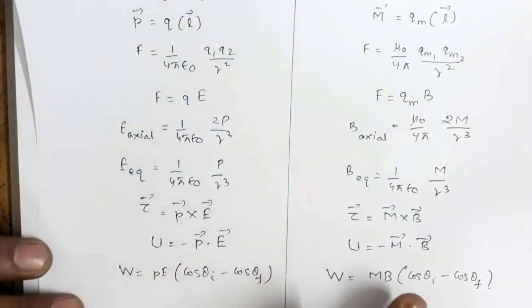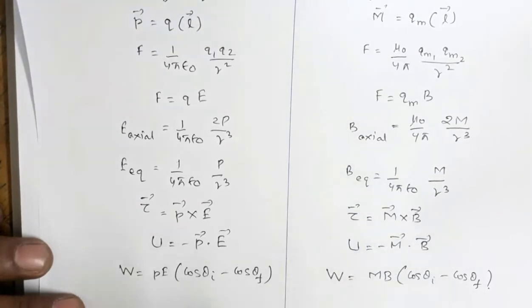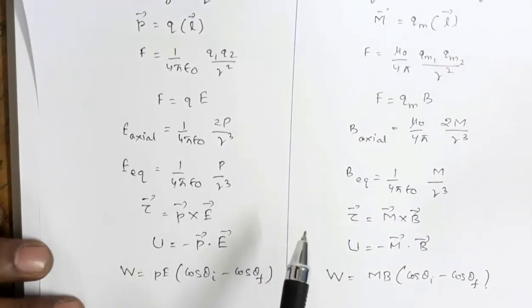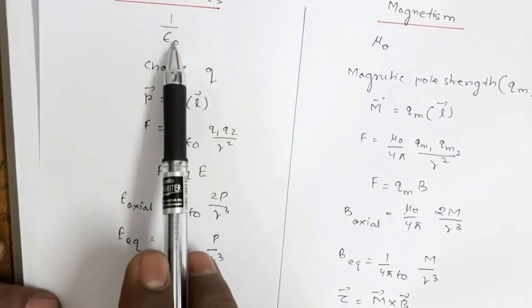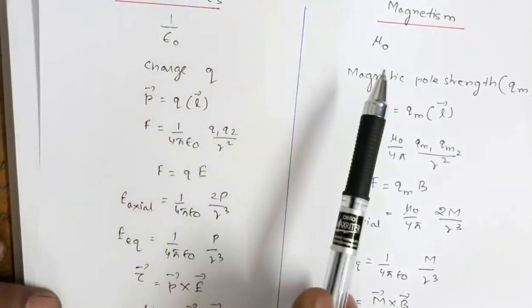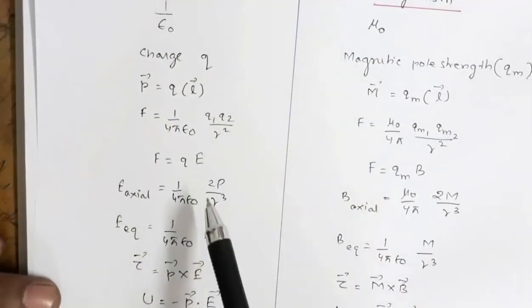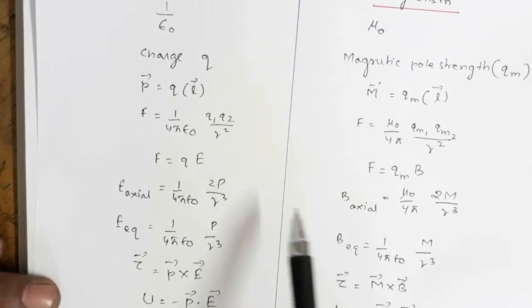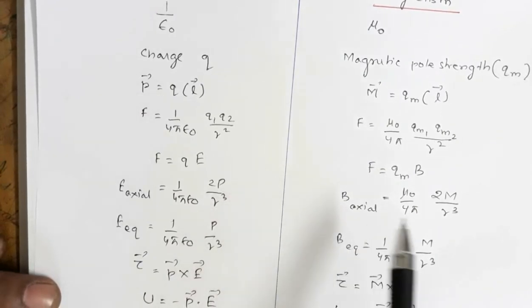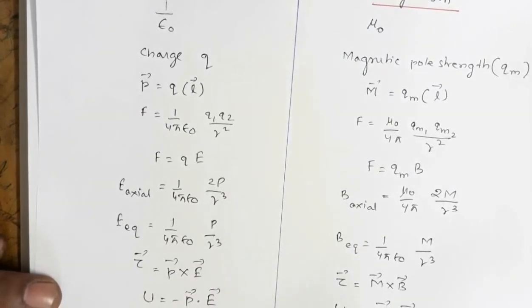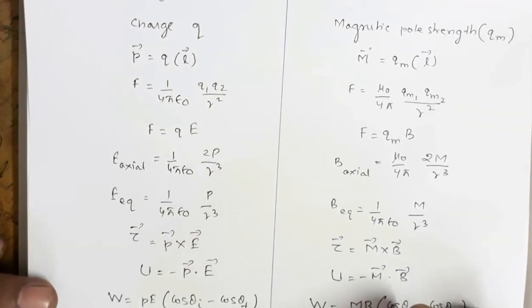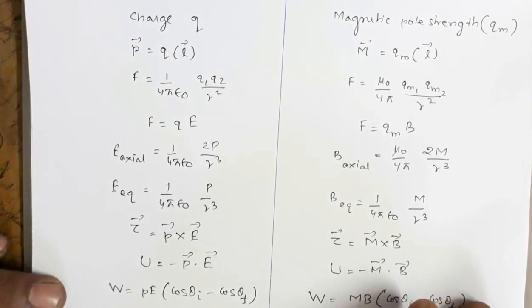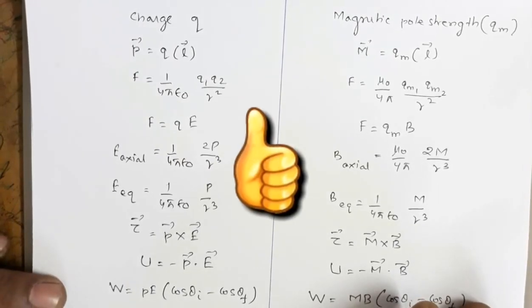If you know one expression you can write the other, provided you replace the corresponding terms: Q is replaced by Q_M, 1/ε₀ is replaced by μ₀, E is replaced by B, and P is replaced by M. I hope this quick recap of these formulas is beneficial for you. Good luck!